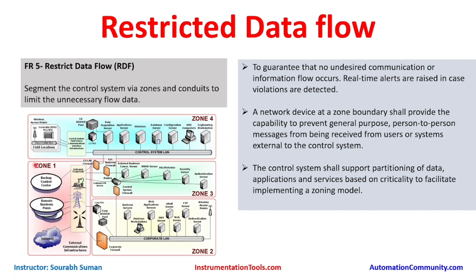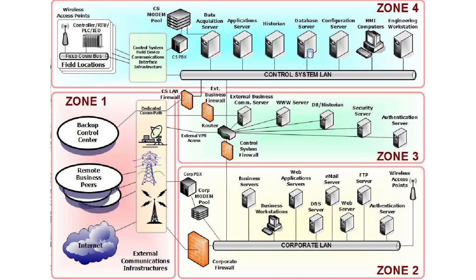If field systems go offline, it results in a direct loss of view, loss of monitoring, and loss of production. However, if a business server or business workstation goes offline, it will not have much impact because it is in a separate internal trusted zone. If a web server or DNS server goes down, it won't have any impact on production. This is how we determine which devices or zones are more critical for the business and which are less critical, and we place proper firewalls and a proper zoning model accordingly.